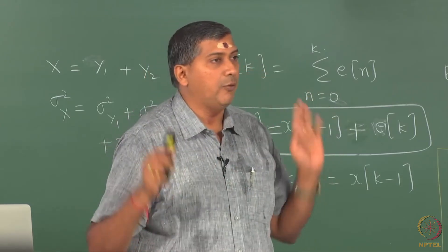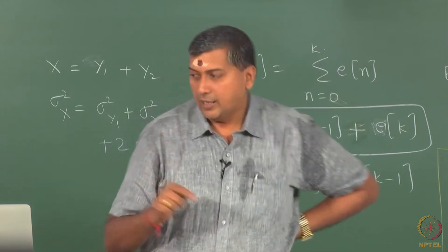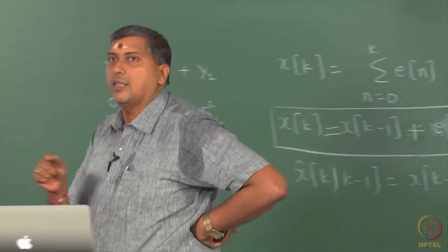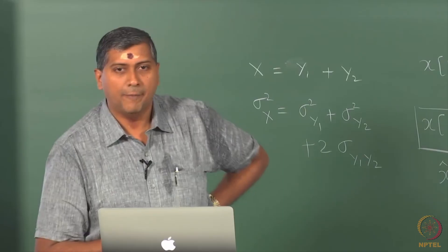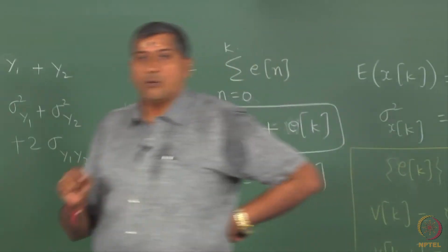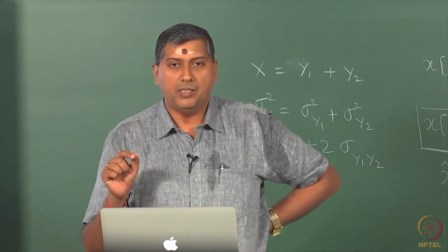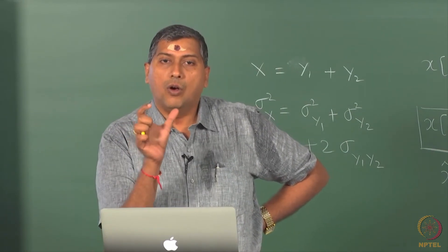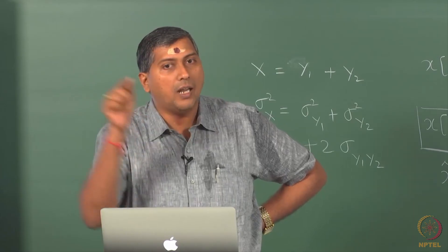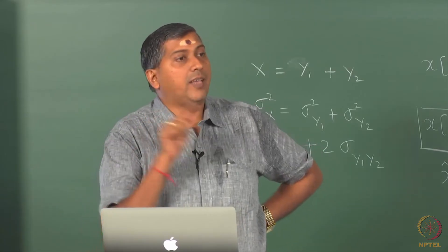I am given that this is an IID process, which means the mean is going to be constant with time. The first thing that I have to make sure is the process is stationary. Now the question is whether this 1 over n sigma xk, which is the time average of n observations, will that converge to mean as n goes to infinity?